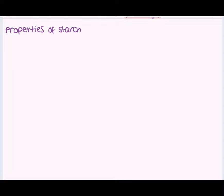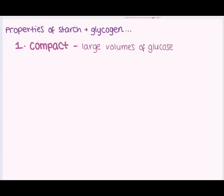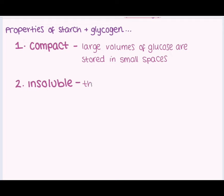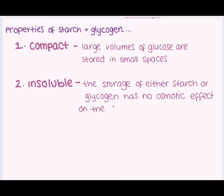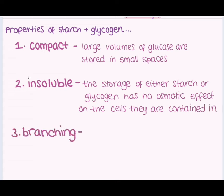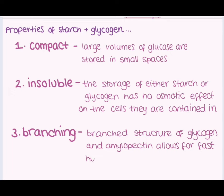Due to their structural similarities, starch and glycogen behave in a very similar manner within cells. Firstly, both are very compact — they can store a lot of glucose molecules in a small space, making them great storage molecules. Secondly, they are both large, insoluble molecules, meaning they cannot diffuse out of cells without being hydrolysed as they are too large to pass through the plasma membrane, and they have no osmotic effect on the cell. Amylopectin and glycogen are both branched, so there are many terminal glucose molecules exposed and ready to be acted on by hydrolytic enzymes, meaning glucose can be quickly released for respiration.